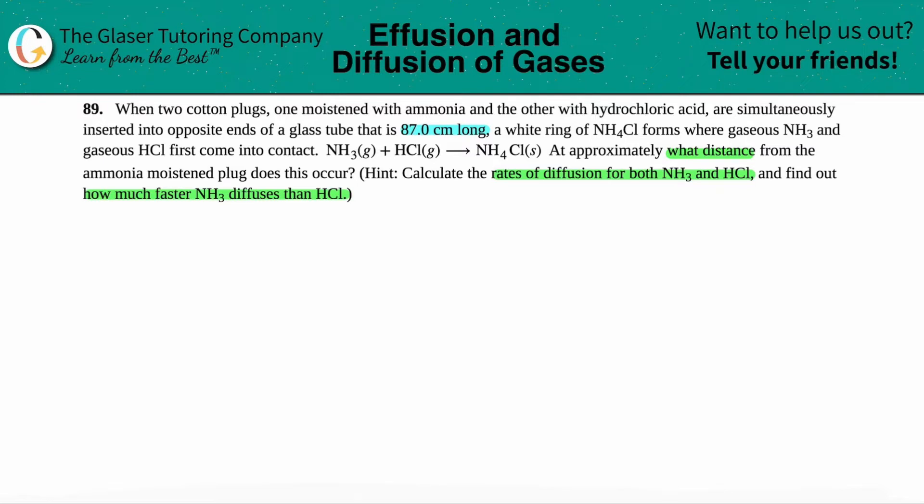If they're traveling at opposite ends of a glass tube, I'll draw a glass tube and put ammonia NH3 in one end and hydrochloric acid HCl in the other. They're going to travel. The question is, at what distance from the ammonia plug does this come into contact happen?